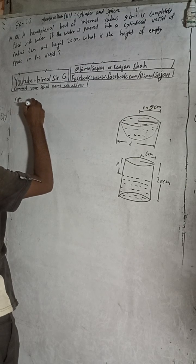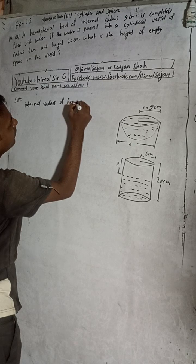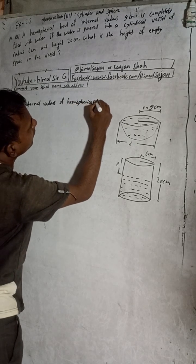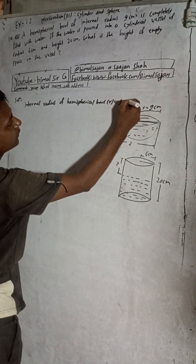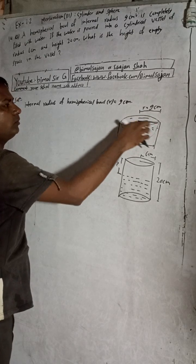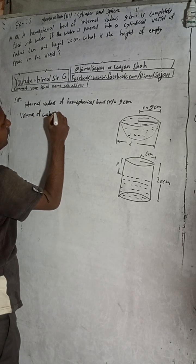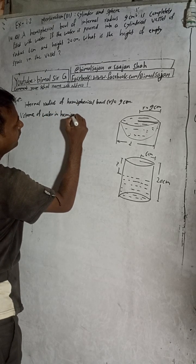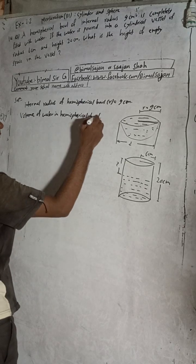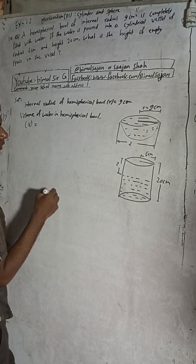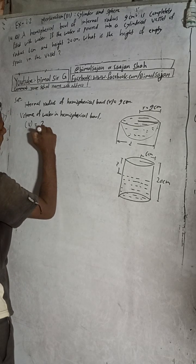Internal radius of the hemispherical bowl: r = 9 cm. Volume of water in the hemispherical bowl: V = 2/3 π r³. The volume of a full sphere is 4/3 π r³, and since a hemisphere is half of that, the formula becomes 2/3 π r³.